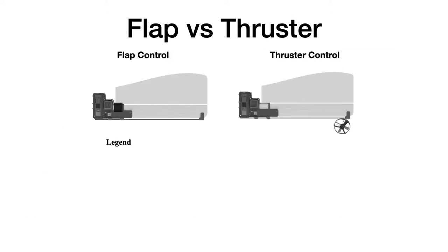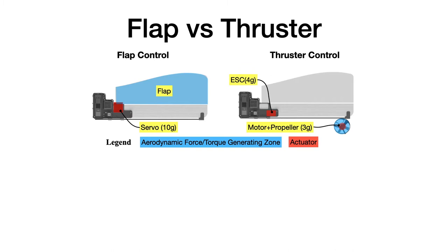So here we will use a thruster instead of a flap. A quick comparison between a flap and a thruster. The blue region is the region where aerodynamic forces are produced. The red region is where the actuator is.